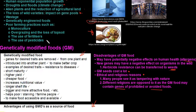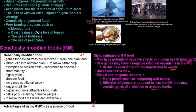Poor farming practices include overgrazing, loss of topsoil, use of fertilizers leading to eutrophication, and use of pesticides. Monoculture is when a single crop is planted on the same land for multiple years, removing specific nutrients so the quality and quantity of the crop decreases. These crops become more susceptible to diseases and pests, and pests multiply faster because their desired food source is available year-round.